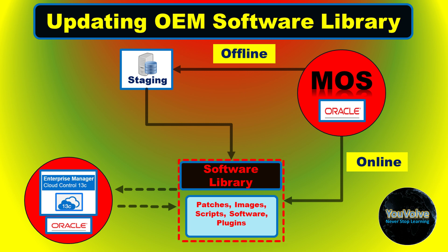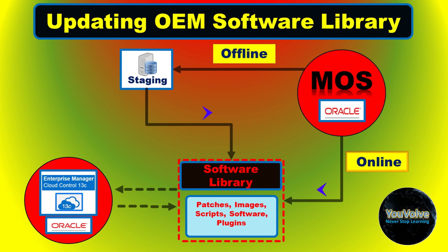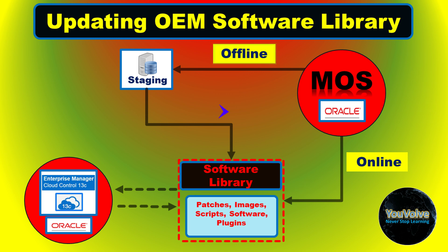Software library supports the update in online as well as in offline mode. In online mode, the library metadata will be updated daily through a scheduled job that extracts the metadata or software from My Oracle Support using your MOS credentials. In offline mode, the metadata or software are downloaded to a staging location and then uploaded to the library using Enterprise Manager command line interface or EM CLI command.